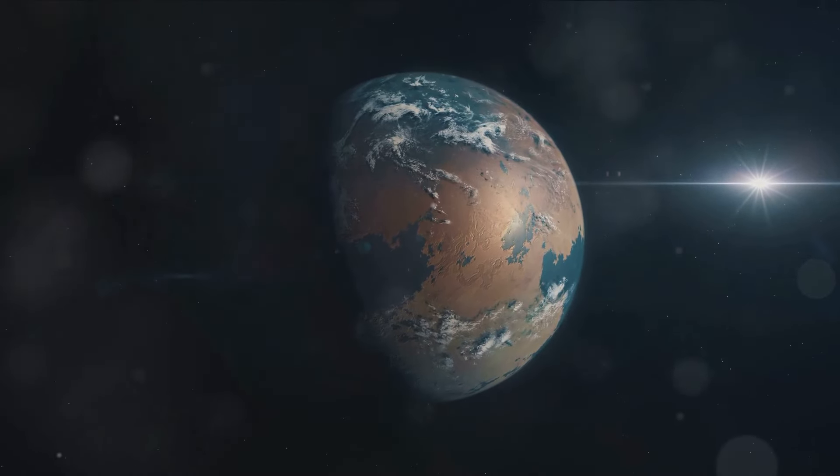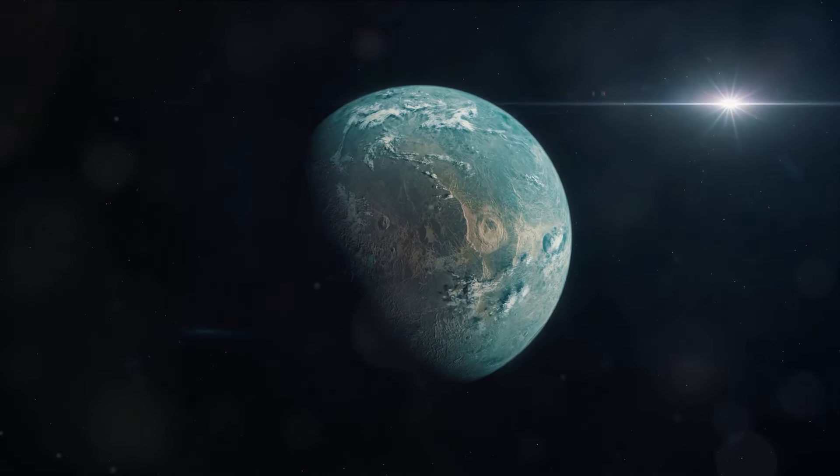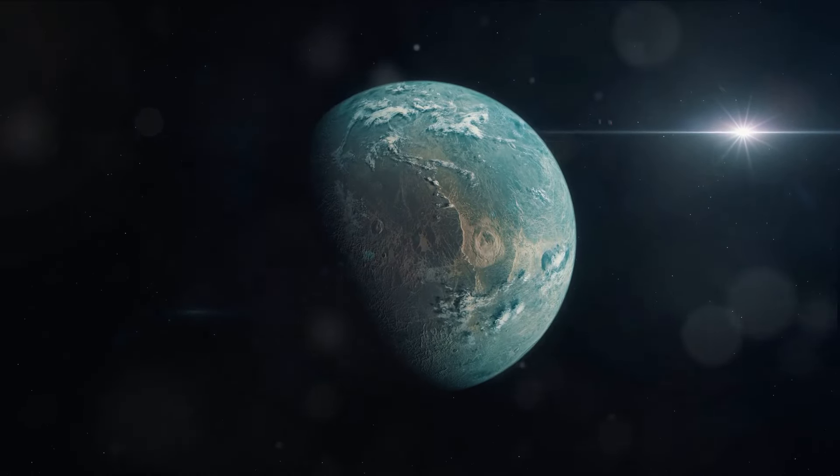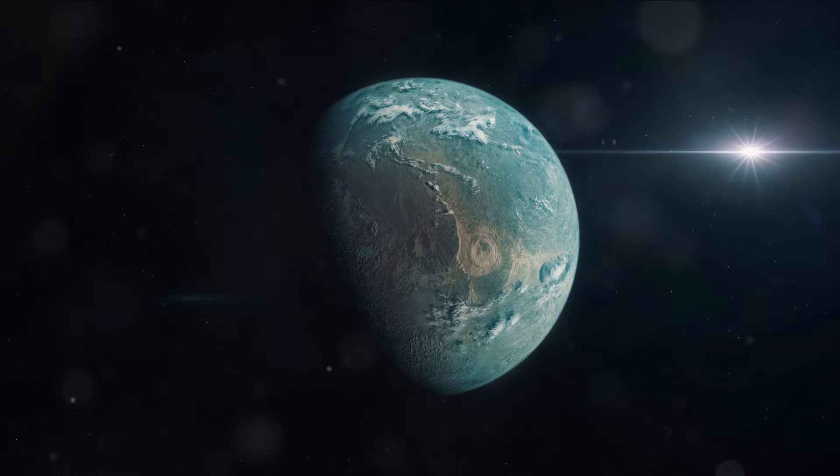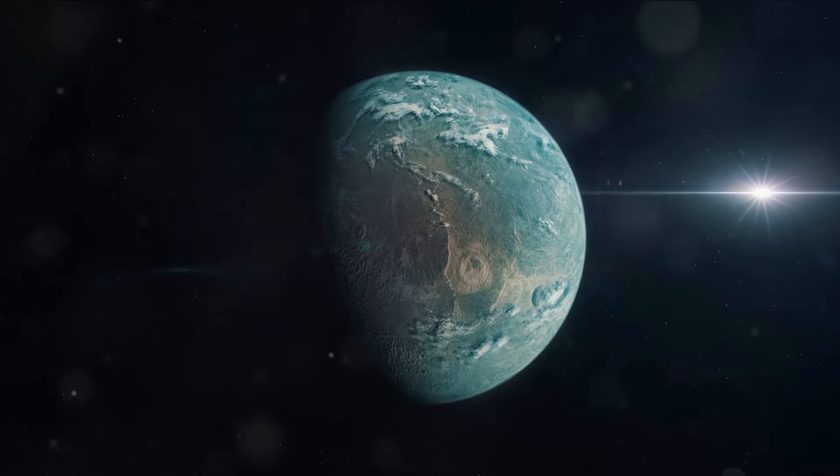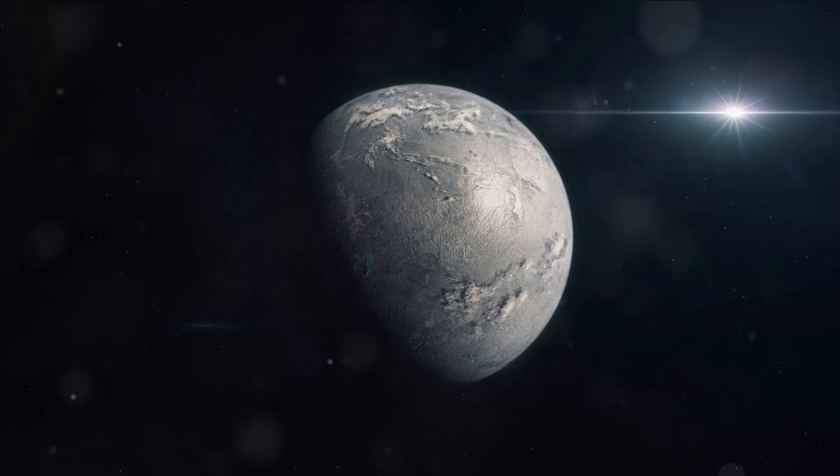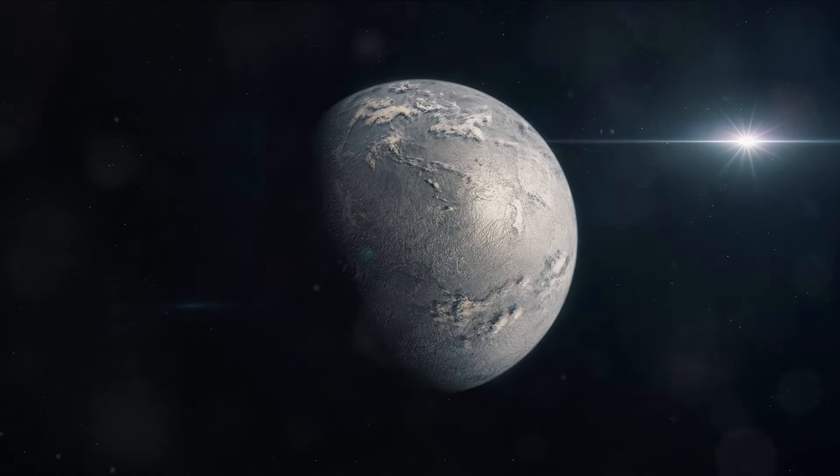First up, we have TRAPPIST-1e. This planet is just a sliver smaller than Earth and receives about the same amount of light as we do from our own sun. The conditions could make it an aqua world, a water paradise, or it might be more like our sibling Venus, shrouded in a thick, steamy atmosphere. It's an enigma waiting to be unraveled.